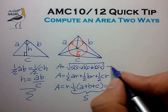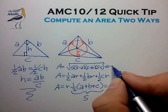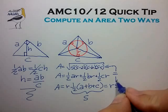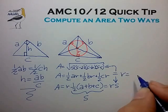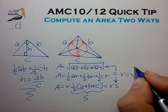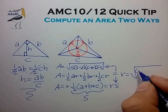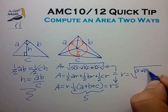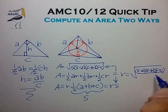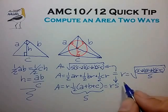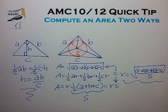Now if we equate the area given by these two expressions, we find very quickly that the radius is given by the expression: the square root of S minus A times S minus B times S minus C, all over S. That's a very elegant result, one that would be very difficult to derive in just about any other way.